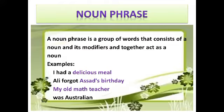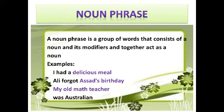First of all, we have a noun phrase. A noun phrase is a group of words that consists of a noun and its modifiers, and together acts as a noun. For example: I had a delicious meal. Ali forgot Asat's birthday. My old math teacher was Australian. The highlighted phrases in color are noun phrases.